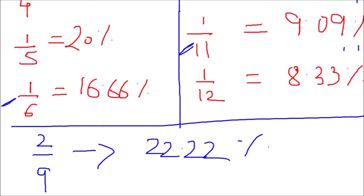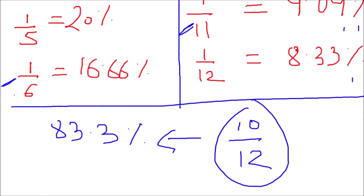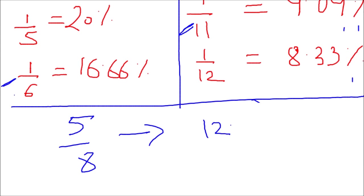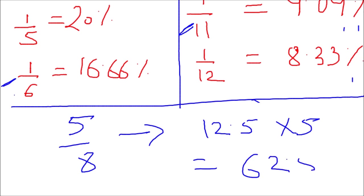Let's take one more example. Suppose I'm given the ratio 5/8 and I want to calculate the percentage. I know that 1/8 is equivalent to 12.5%, so 5/8 = 5 × 12.5 = 62.5%. As simple as that.